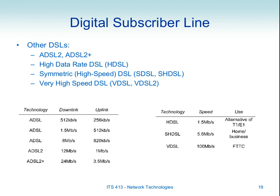There are other types of DSL. HDSL is symmetric at 1.5 Mbps up and down. SHDSL improves that to 5.6 Mbps, used more for businesses connecting offices together. VDSL offers 100 Mbps. The three main trade-offs between DSL types are data rate, distance coverage, and cost of installing the equipment.